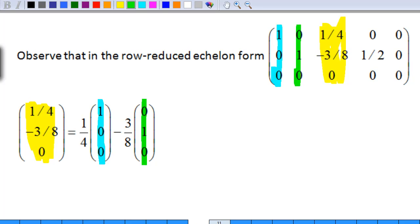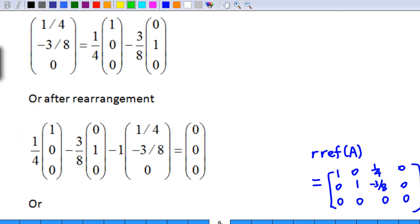Now, if we rearrange this, I will have 1 quarter times 1 0 0, minus 3 over 8 times 0 1 0, minus 1 times 1 quarter minus 3 over 8 0, equal to 0 0 0.